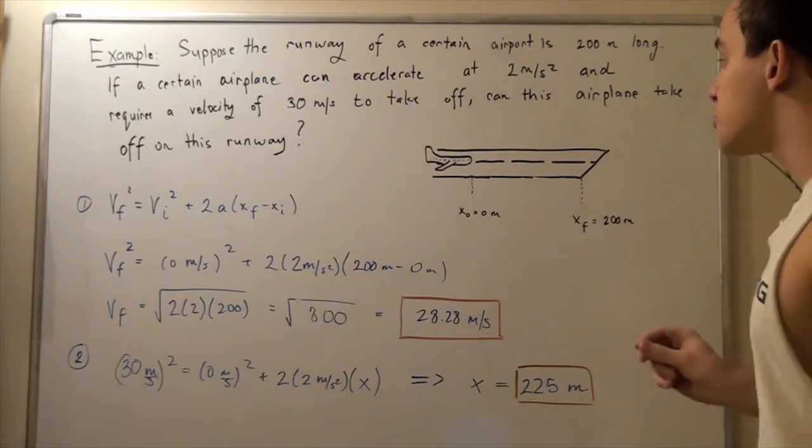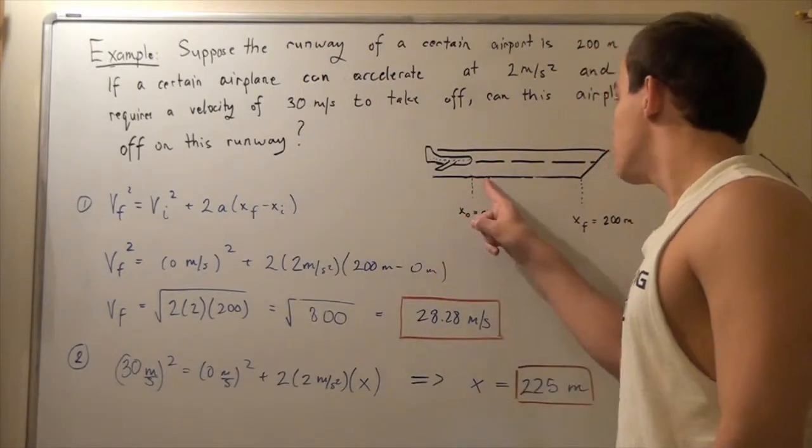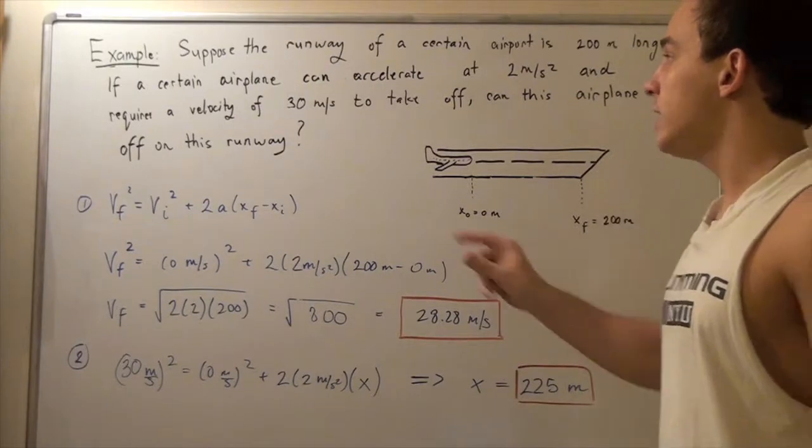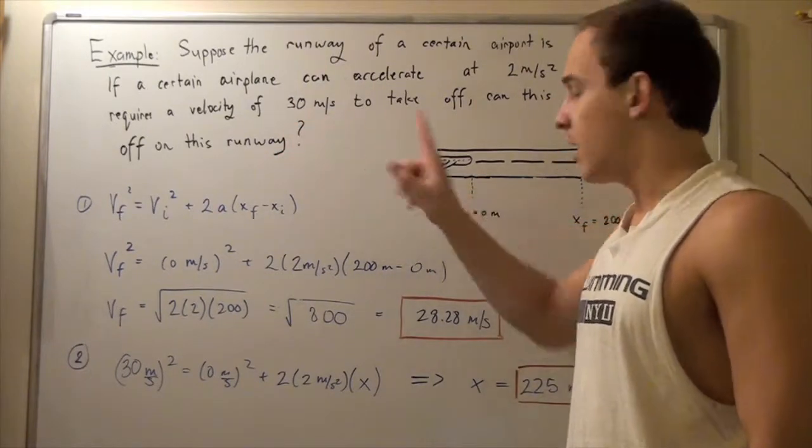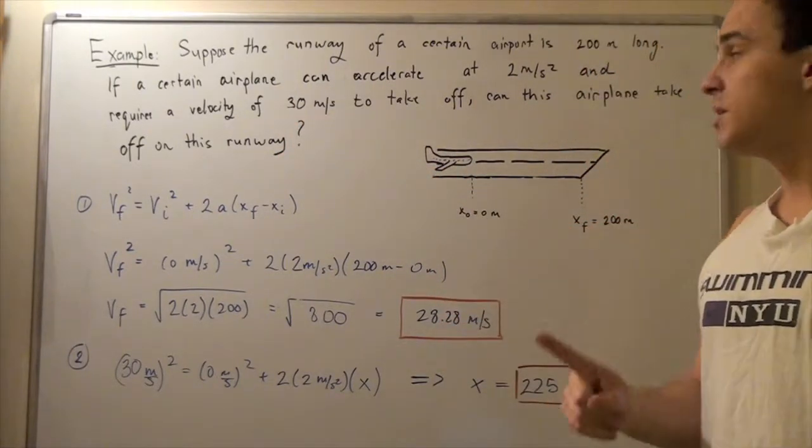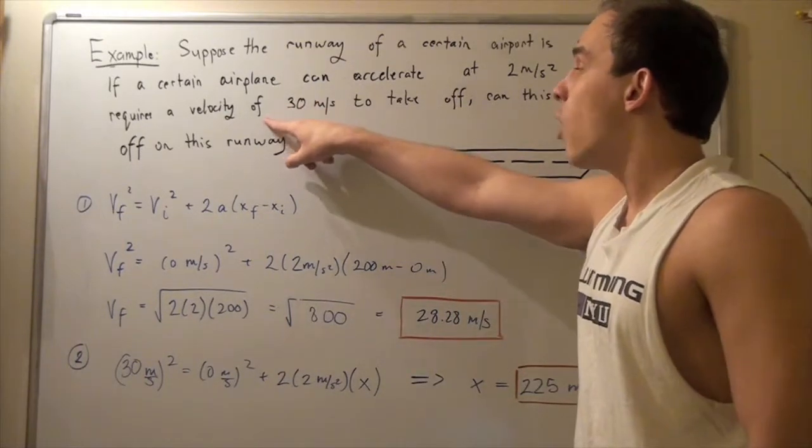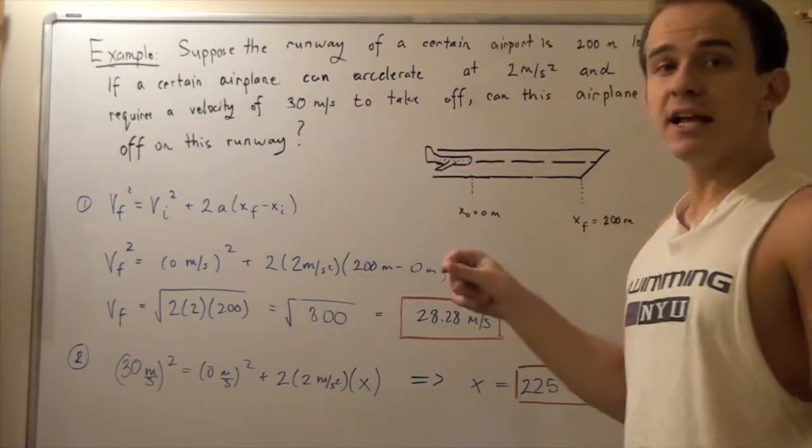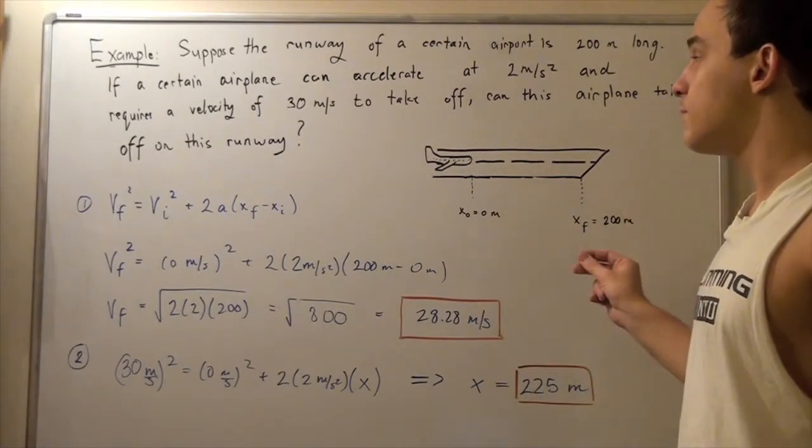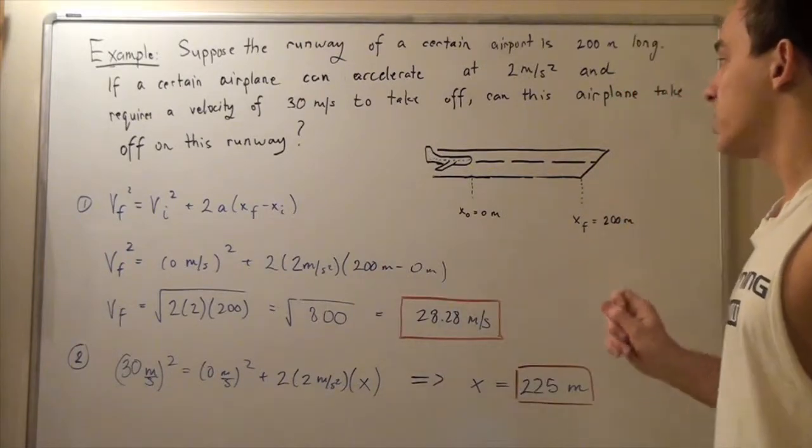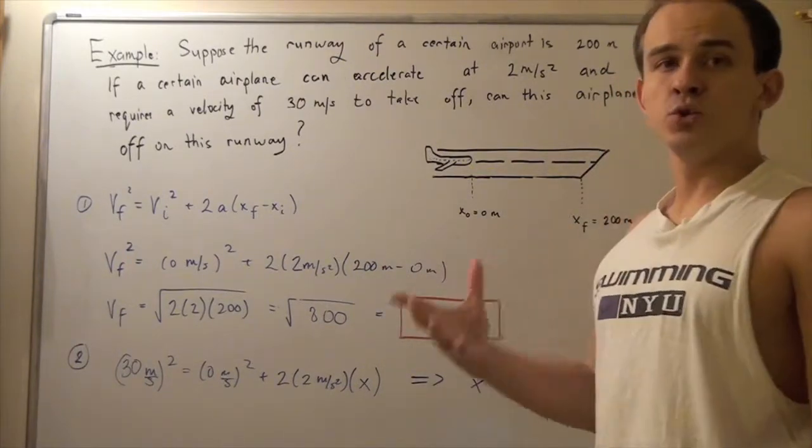In other words, when our airplane travels 200 meters on our runway, it reaches a speed of only 28.28 meters per second, which is not enough because it requires a speed of 30 meters per second to take off from this runway. So this airplane will not be able to use this airport, because the runway is simply too short.